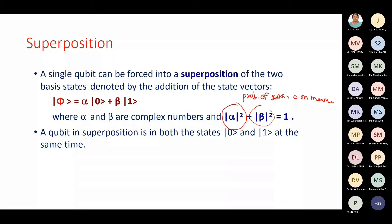We are seeing the one-qubit system. If we generalize it for n qubits, you will appreciate the benefit. Alpha and beta are the amplitudes of 0 and 1 states, and mod alpha squared and mod beta squared are the probabilities of getting 0 and 1 on measurement. On measurement, either we will get 0 or 1 — those are the probabilities.